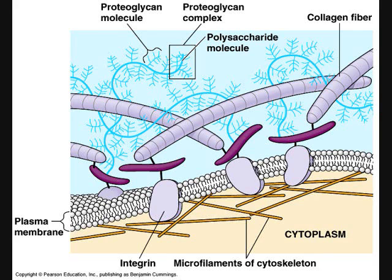The last class of molecules in the ECM are proteoglycans. Proteoglycans are made up of a protein core bonded with long chains of repeating disaccharides.